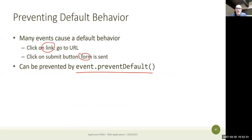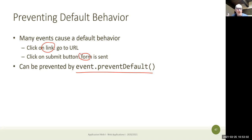preventDefault only makes sense when the browser has a default action — mainly links and forms. Other default actions, like a cursor appearing when you click a textarea, are usually welcome and you wouldn't want to prevent them. Some websites do disable right-click or text selection by intercepting events and calling preventDefault — this hijacks default browser behavior and is not good practice.